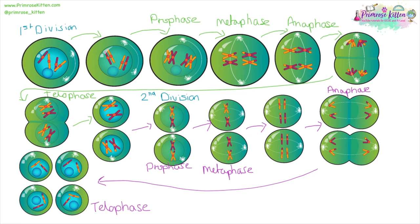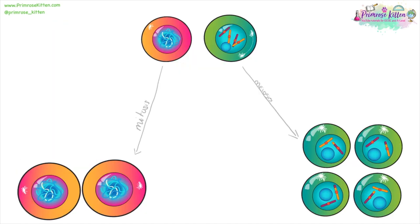In meiosis we have two divisions. The chromosomes will line up and sort themselves down the middle, with a little bit of crossing over, where they swap chunks of their chromosomes to increase genetic diversity. They divide into two, then line up and divide into two again. Each of the cells will have half the number of DNA as the parent cell. Mitosis leads to two identical daughter cells, whereas meiosis leads to four different daughter cells.